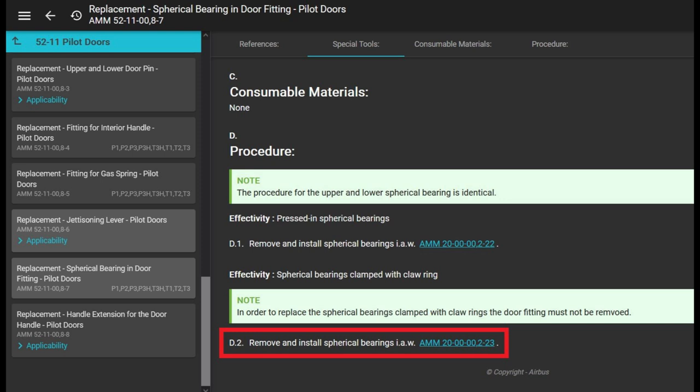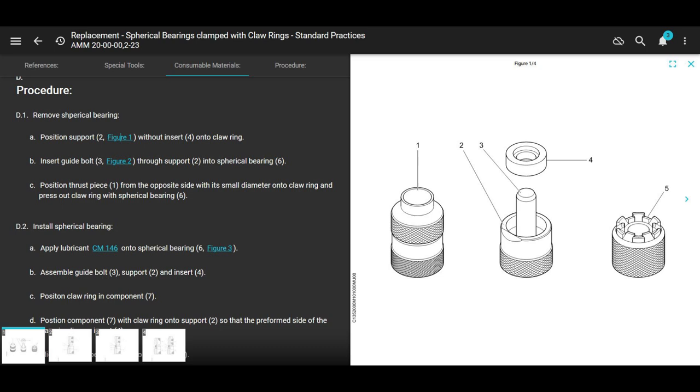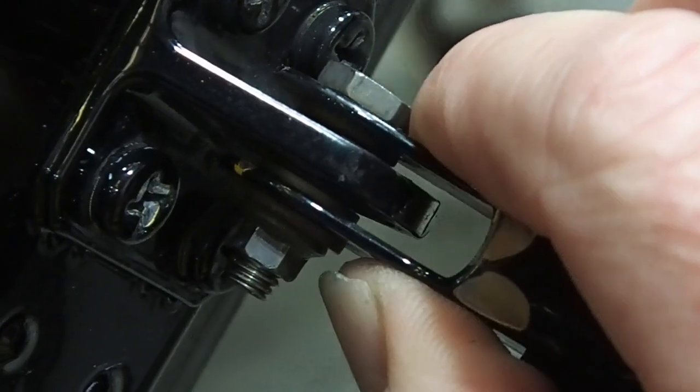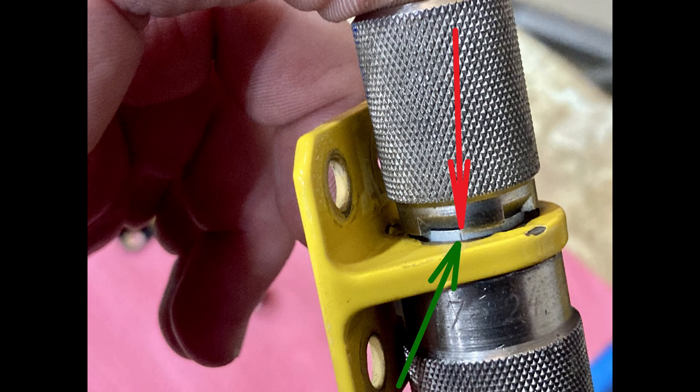Now we're going to go over that real quick. How do we remove the bearings? This is the only place I don't see it on the clamshell doors, but this is on replacement of spherical bearings in door fittings, pilot doors. This is 5211-008-7. And it says remove and install spherical bearings with claw ring in accordance with AMM 20-00-002-23. Let's go over that real fast. We go over the instructions of how to replace these bearings in the claw ring standard practices. It's not difficult. The install spherical bearing is like three or four pages, but we're just going to go through it. We already talked about how to replace the bearings in the fittings earlier in the video, so we're not going to go over that again. We're just going to go over a couple other tips. I know this video is going to be like 12, 13 minutes, sorry about that.